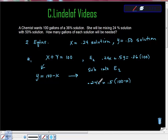So what we need is everything in one variable. Here we have this in X and here we have Y in terms of X also. I'm going to do 0.36 times 100 is 36. Then I'm going to start cleaning up my math. I'll distribute here. I'm going to get 0.24X plus 0.5 times 100 is 50, and 0.5 times negative X is negative 0.5X. So all I did was distribute into here equals 36.